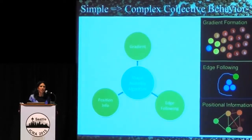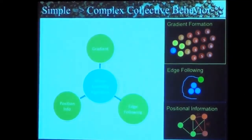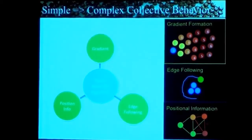We have a self-assembly algorithm that composes three different kinds of behaviors. Gradient formation is the idea that as information propagates from a source, it can serve as a sense of distance. Edge following means a robot can move predictably about another robot. And positional information — used a lot in sensor networks — means that if we can measure distances from each other and form triangles, we can figure out where we are relative to each other. In this way, a whole system can form a coordinate system in a distributed way.